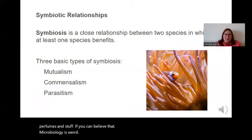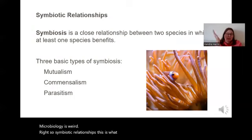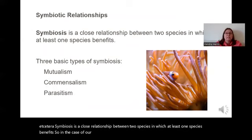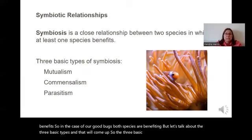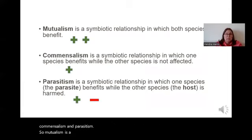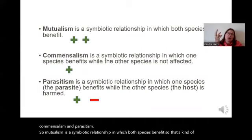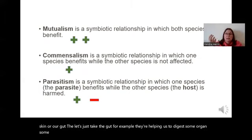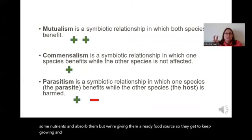Let's talk about symbiotic relationships — this is what we have with all of those bacteria, viruses, fungi, et cetera. Symbiosis is a close relationship between two species in which at least one species benefits. In the case of our good bugs, both species benefit. There are three basic types: mutualism, commensalism, and parasitism. Mutualism is a symbiotic relationship in which both species benefit — like our gut, where bacteria help us digest nutrients and absorb them, while we give them a ready food source.